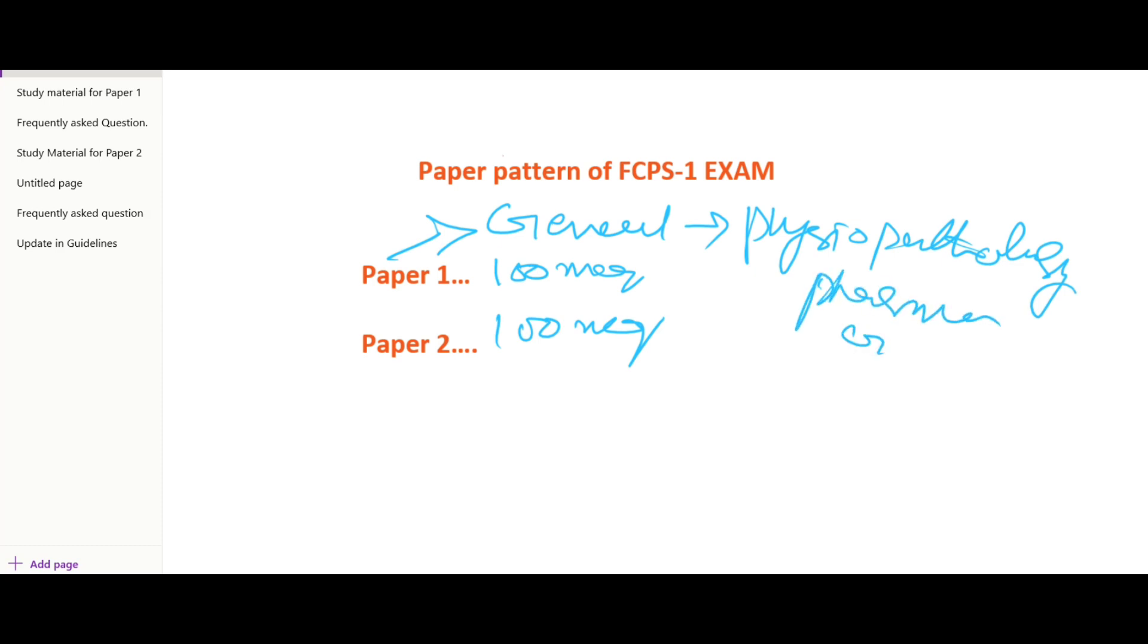And Paper 2 is mostly specialty-based, means if you are preparing for ophthalmology exam, there will be 70 to 80% questions from ophthalmology.